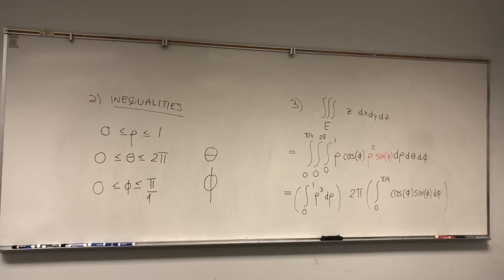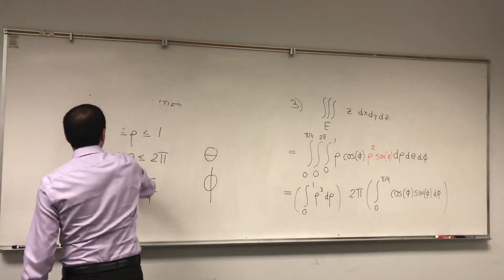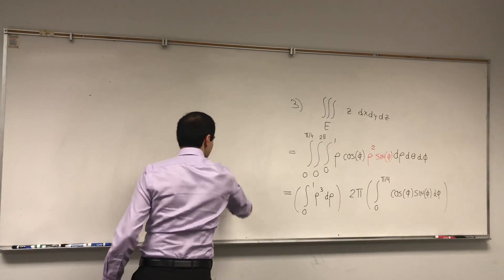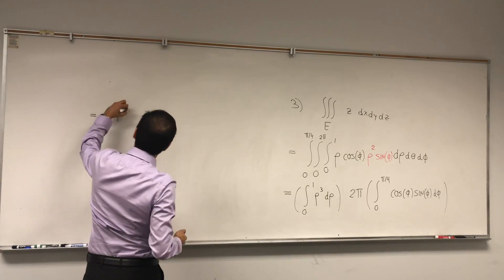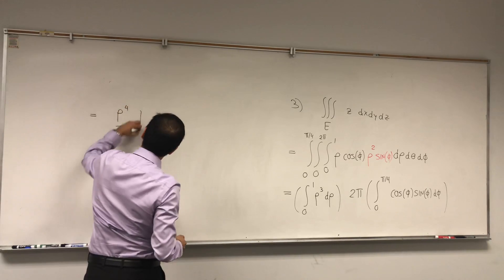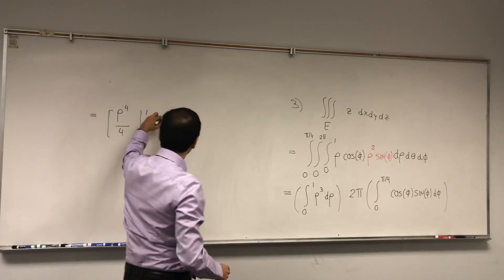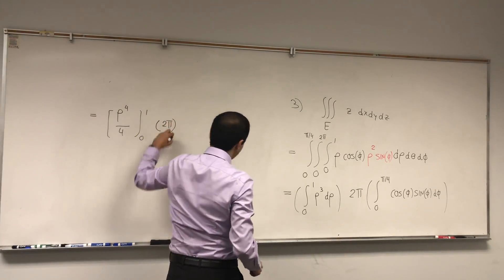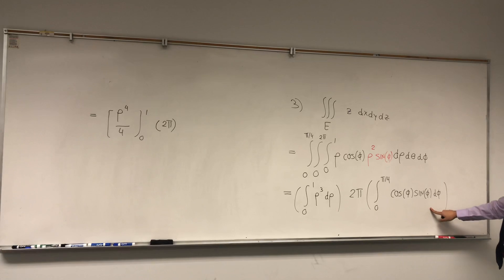And last but not least, you just have to evaluate that. So what you get then is, if you want, rho to the fourth over 4, from 0 to 1, times 2 pi. Okay, this one, you have two ways of dealing with it.